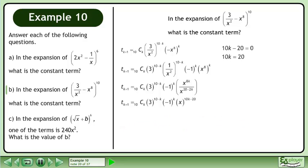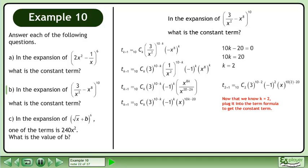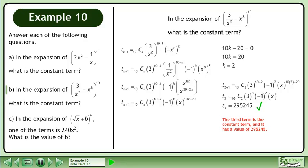Isolate the term with k. The value of k is 2. Now that we know k equals 2, plug it into the term formula to get the constant term. Simplify. The third term is the constant term, and it has a value of 295,245.